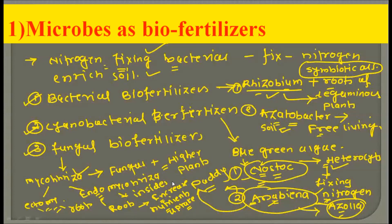So in microbes as biofertilizers we have seen three types: bacterial biofertilizer, cyanobacterial biofertilizer, and fungal biofertilizer. In bacterial biofertilizer: Rhizobium with symbiotic association with roots of leguminous plants, and Azotobacter as free-living bacteria in the soil. In cyanobacterial biofertilizer: Nostoc and Anabaena, where Anabaena forms a symbiotic association with the fern Azolla. In fungal biofertilizer: mycorrhiza — ectomycorrhiza on the surface and endomycorrhiza inside the roots — both increasing surface area for nutrient absorption.